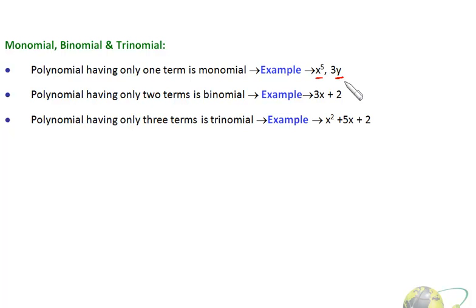So these are known as monomial. In this case there are two terms, 3x is one term and 2 is another term. So it's a combination of two terms, so we call it a binomial.